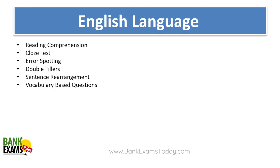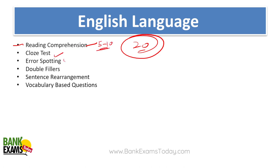In the English language section, reading comprehension carries the most marks — quite surprising, as generally the weightage of English is not higher than quant or reasoning. You can expect 5 to 10 questions directly from RCs. Other topics include cloze test, error spotting, spotting grammatical errors, double fillers, sentence rearrangement, and vocabulary-based questions.